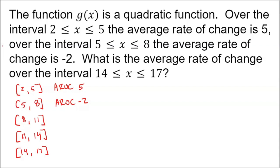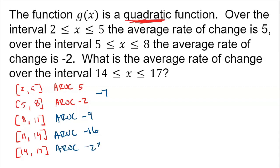This is where you have to understand the definition of a quadratic function. For a quadratic function, the average rates of change are linear over those equal-length consecutive intervals. So the average rates of change change at a constant rate. In the first interval it was 5, then it went to negative 2 — that's a change of down 7. Because we know the definition of a quadratic function, that down 7 pattern continues: negative 9 for 8 to 11, negative 16 for 11 to 14, and negative 23 for 14 to 17.